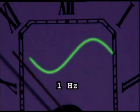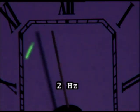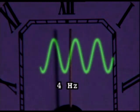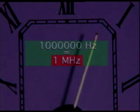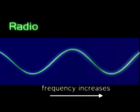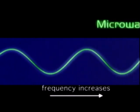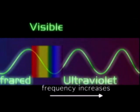Frequency is measured in hertz. One hertz is one wave per second, two hertz is two waves per second, four hertz is four waves per second. A million waves per second is called a megahertz. Wavelength and frequency are related — as the waves get shorter, the frequency increases.